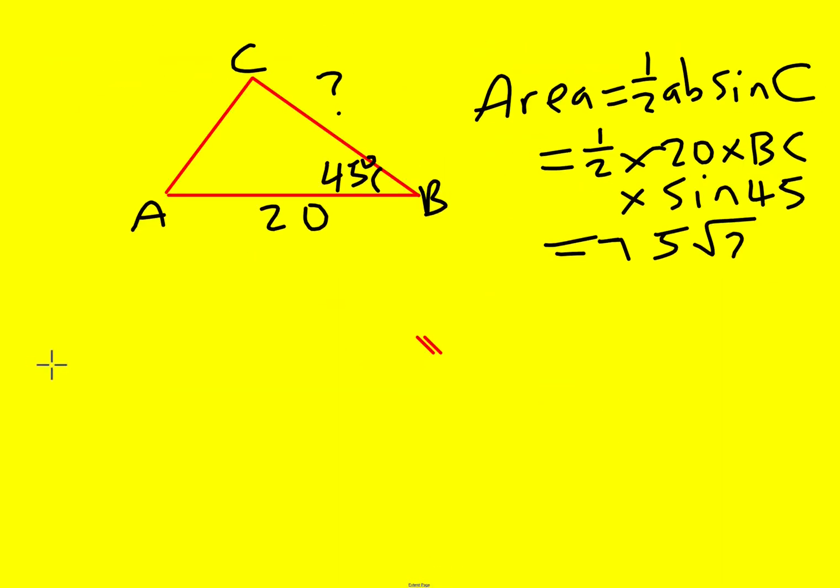So now I just need to solve this. I can write down that, I'm just going to simplify it first. So half times 20 is 10, sine 45 is 1 over root 2. So I can write 10 over root 2 BC equals 75 root 2. Now I can multiply both sides by root 2 to give me 10 BC equals 150.